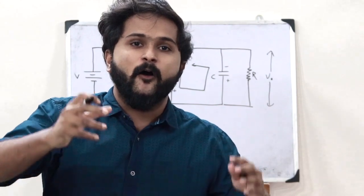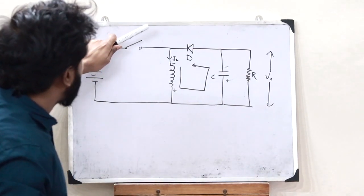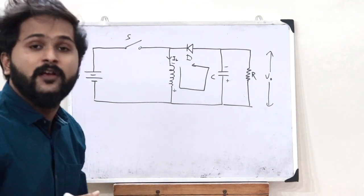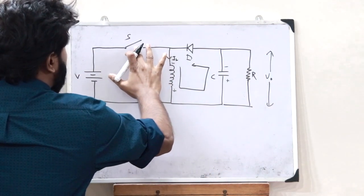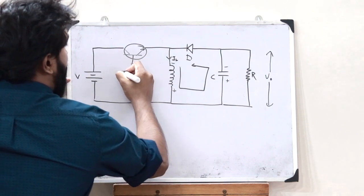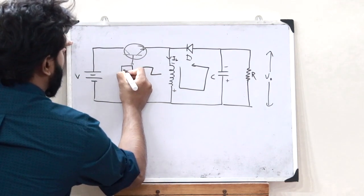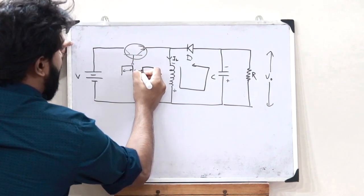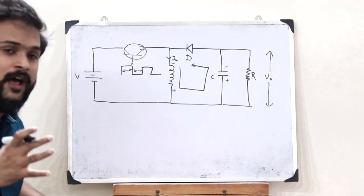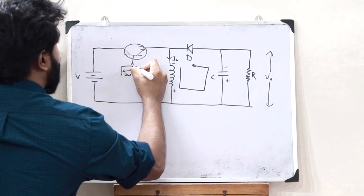This is the basic working of a buck boost converter — it is a switched converter where the switch is periodically turned on and off. Manually switching is impractical, so the switch is replaced with a semiconductor device driven by a pulse-width modulated (PWM) signal. The PWM signal defines the on-time and off-time of the switch. The duty cycle D is defined as the on-time divided by the total time period T, so T_on = D·T and T_off = (1−D)·T.